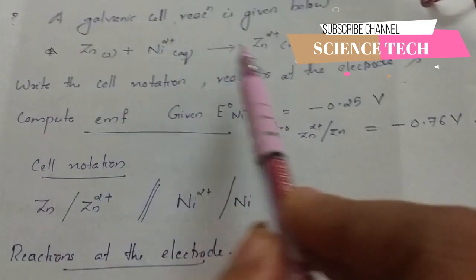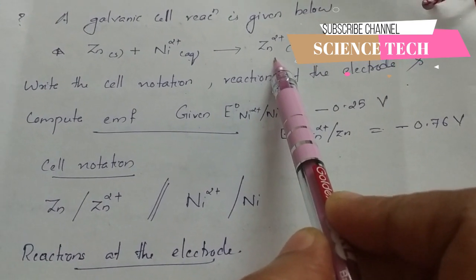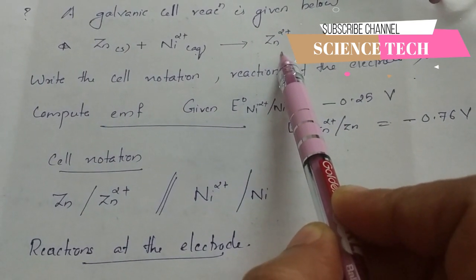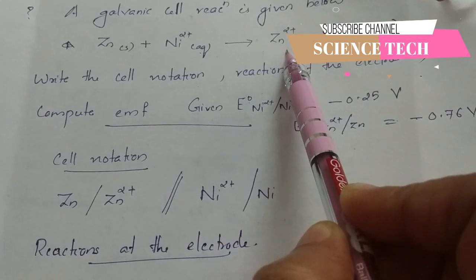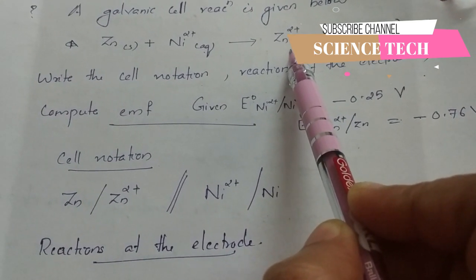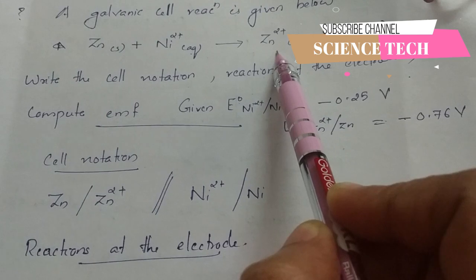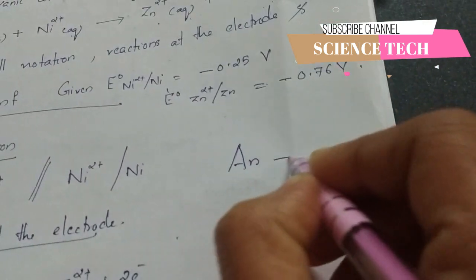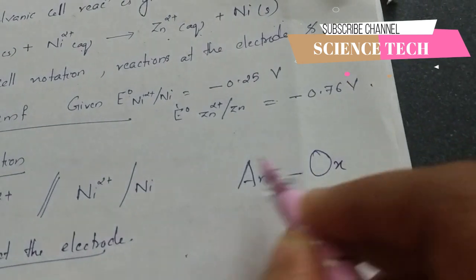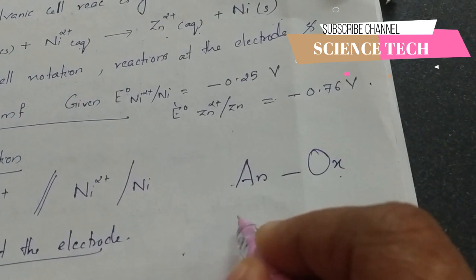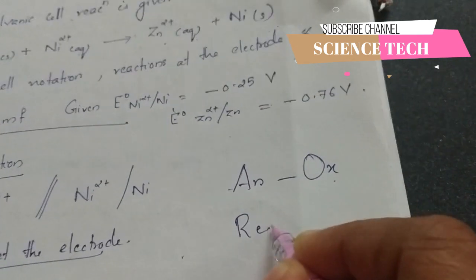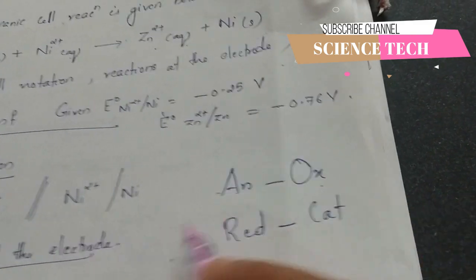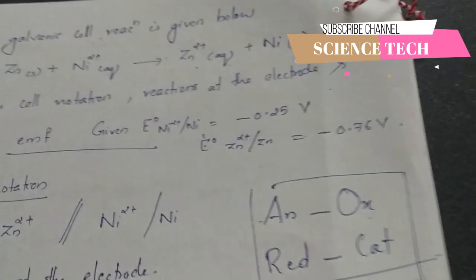We will write Zn and Zn2+. We need oxidation — Zn2+ increases. What is oxidation in the electrode? This is the anode. The acidity in anode is oxidation. What is the reaction in anode? Anox — anode is oxidation. Red cat — cathode is reduction.